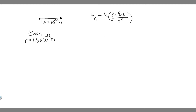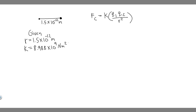So we have the radius. What we need is k, which is just a constant — a number you have to memorize that's the same for everything — which is 8.988 times 10 to the 9 newton meters squared over coulombs squared.